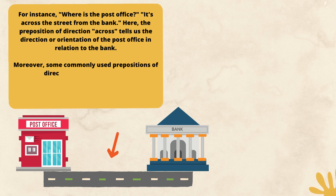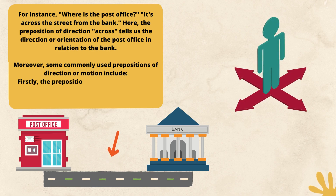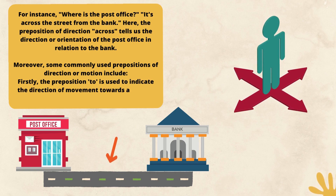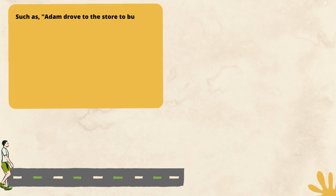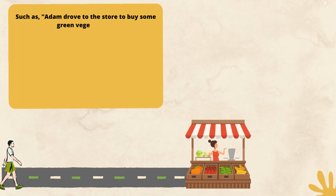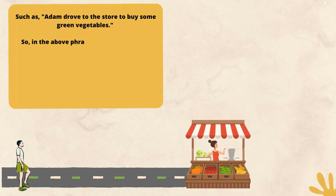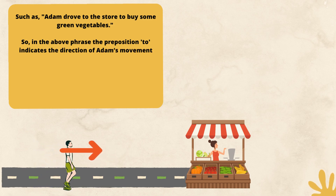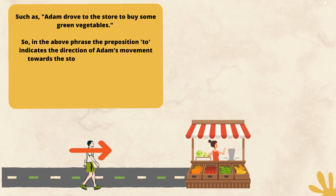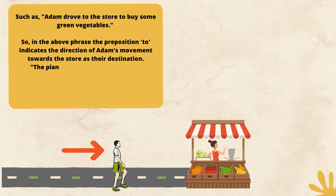Some commonly used prepositions of direction or motion include the following. Firstly, the preposition 'to' is used to indicate the direction of movement towards a specific destination or endpoint. Such as: Adam drove to the store to buy some green vegetables. In this phrase, the preposition 'to' indicates the direction of Adam's movement towards the store as his destination.